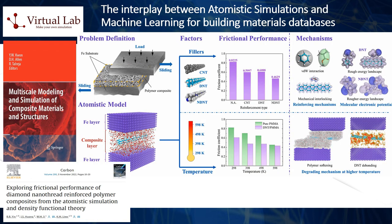On the other hand, atomistic simulation techniques, like molecular dynamics (MD) or Monte Carlo (MC) simulations, model systems at the scale of atomic interactions. These methods provide dynamic insights into material properties by simulating physical movements and interactions within a material, capturing phenomena like diffusion, structural phase transitions, and mechanical deformation. While less computationally demanding than Ab Initio methods, traditional atomistic simulations still require substantial time and resources, particularly as the complexity and size of the simulated system increase.